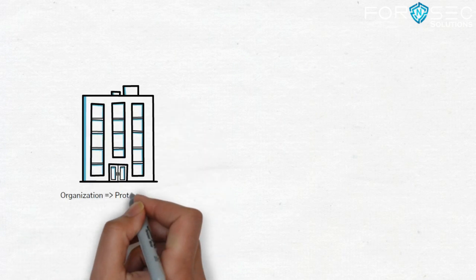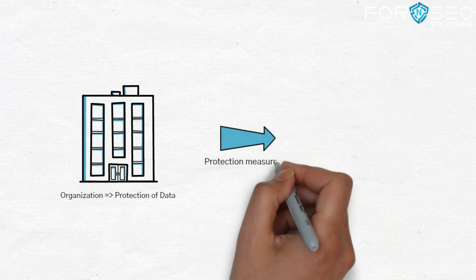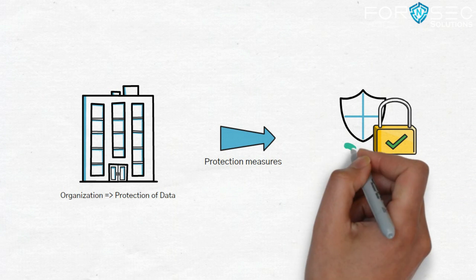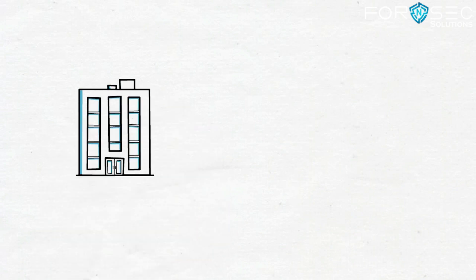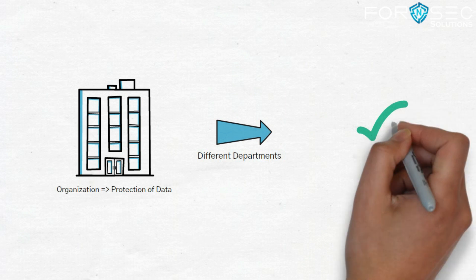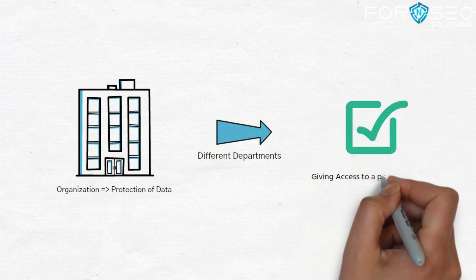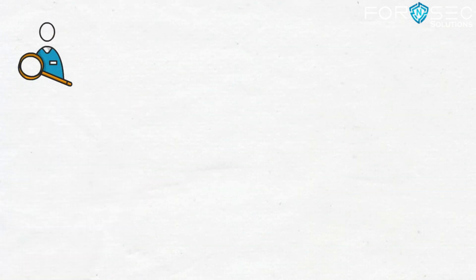Cyber security also includes protection of sensitive data by using strong encryption and access control. What is important in an organization is their data, so the protection measures include using strong passwords and strong encryption. Access control means, for example, a company has various departments such as HR, admin, and investigative departments — each department has different documents and different access needs. So using strong encryption and access control determines how much access is given to each department to keep the company protected.